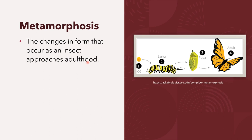In biology, molting — also known as ecdysis in many invertebrates — is the way an animal routinely casts off a part of its body, either at specific times of the year or at specific points in its life cycle.